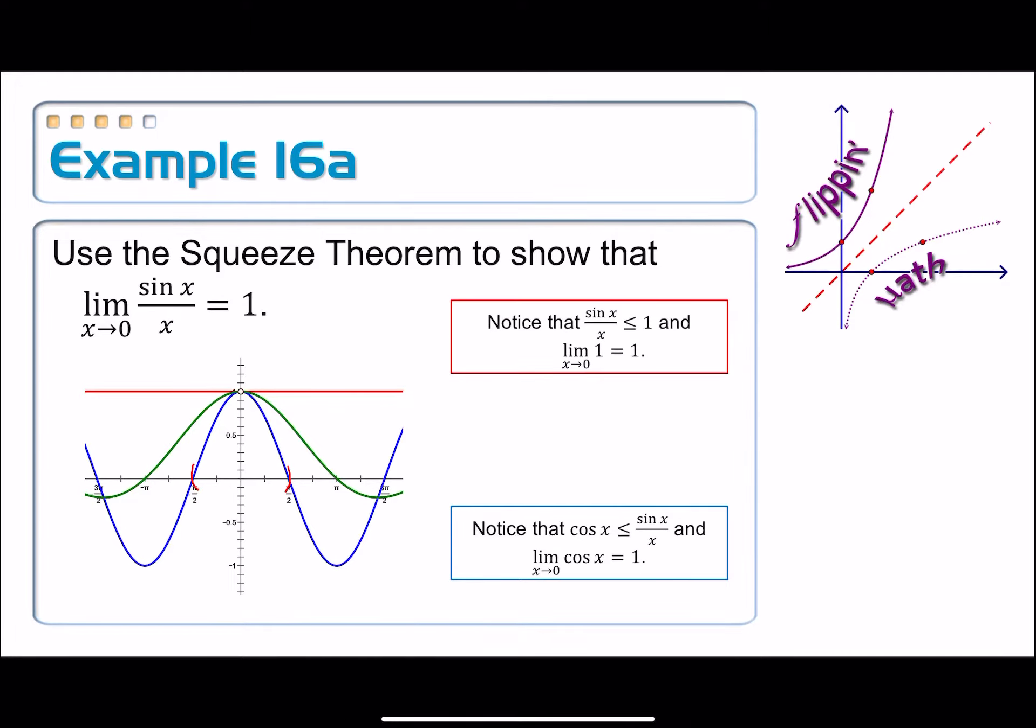So notice that sine x over x is less than or equal to 1. And this is true over the interval that we picked, from negative pi over 2 to pi over 2, but it's actually true everywhere.